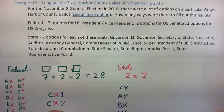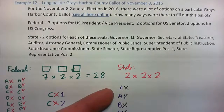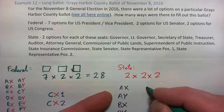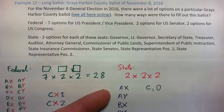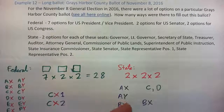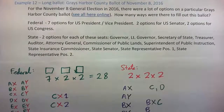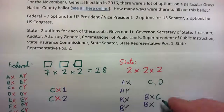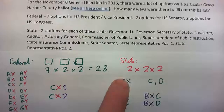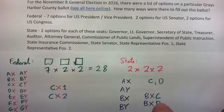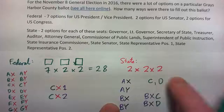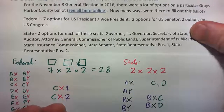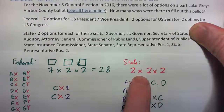Then if there are two candidates running for secretary of state — say C and D — you can pick any of those four governor/lieutenant governor combinations and add either C or D. For example, B for governor, X for lieutenant governor, C for secretary of state, or B, X, D for secretary of state. So for every one of those four ways you create two new ways, making 4 × 2 = 8 ways once you include secretary of state.